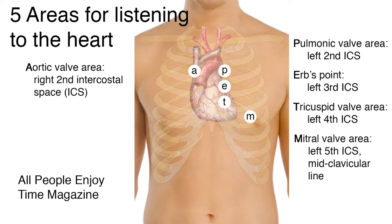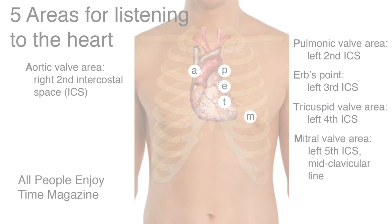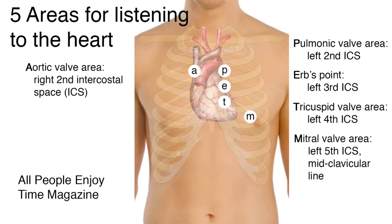The aortic valve area is on the right side at the second intercostal space. The pulmonic valve area is on the left side at the second intercostal space. Erb's point is at the left third intercostal space. The tricuspid valve area is at the left fourth intercostal space. The mitral valve area is at the left fifth intercostal space at the midclavicular line. Remember these locations with the mnemonic A-P-E-T-M: 'All People Enjoy Time Magazine.'